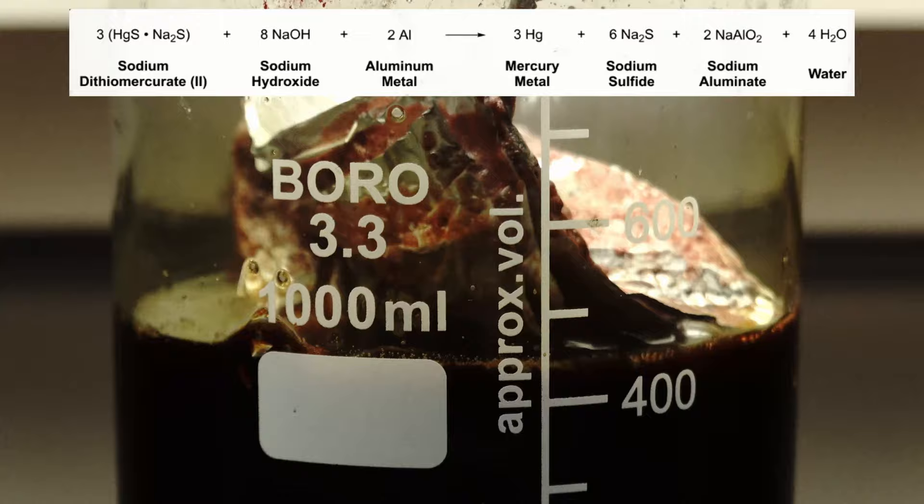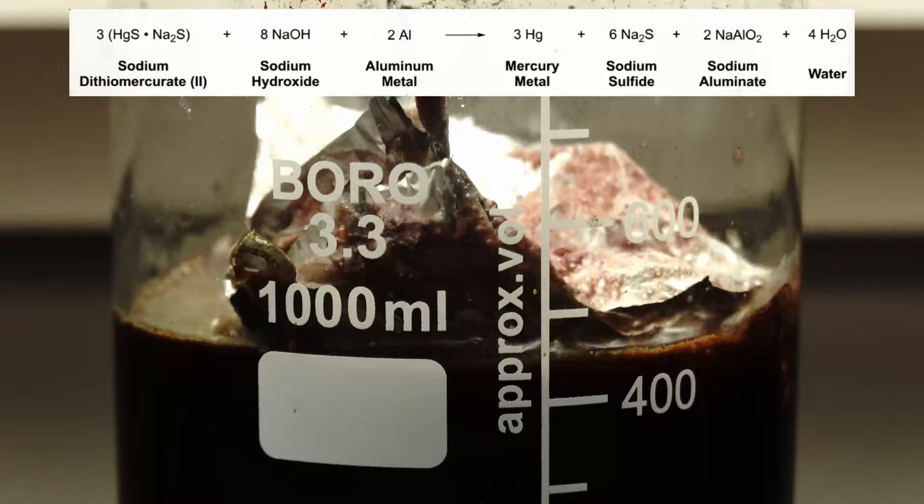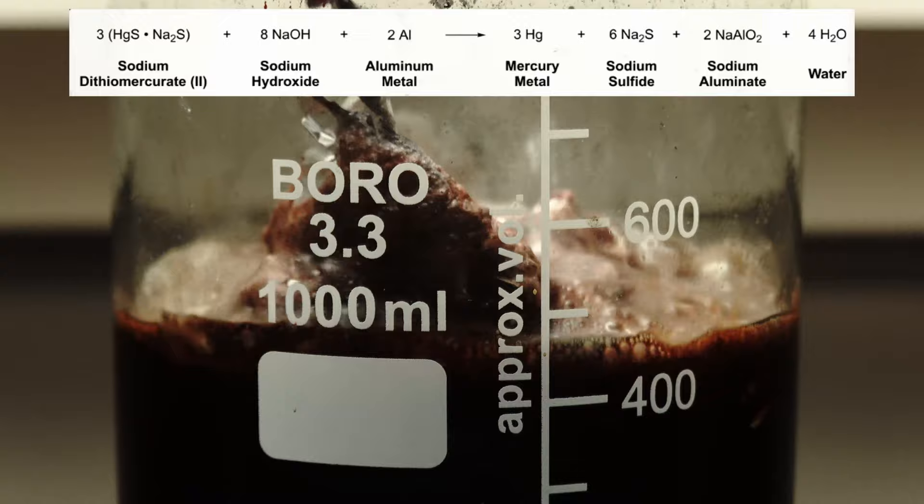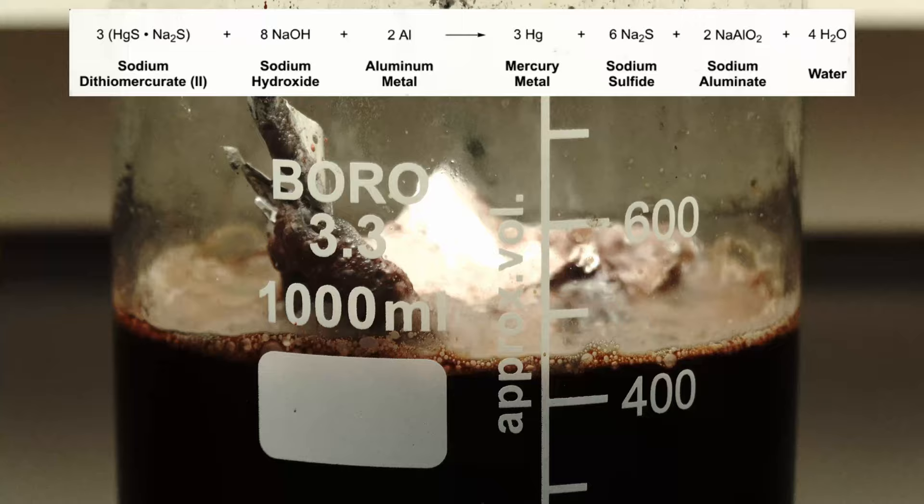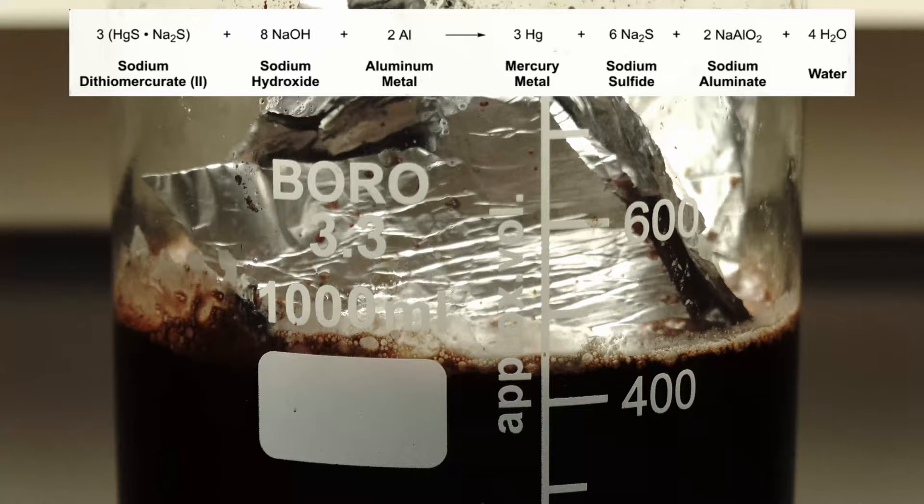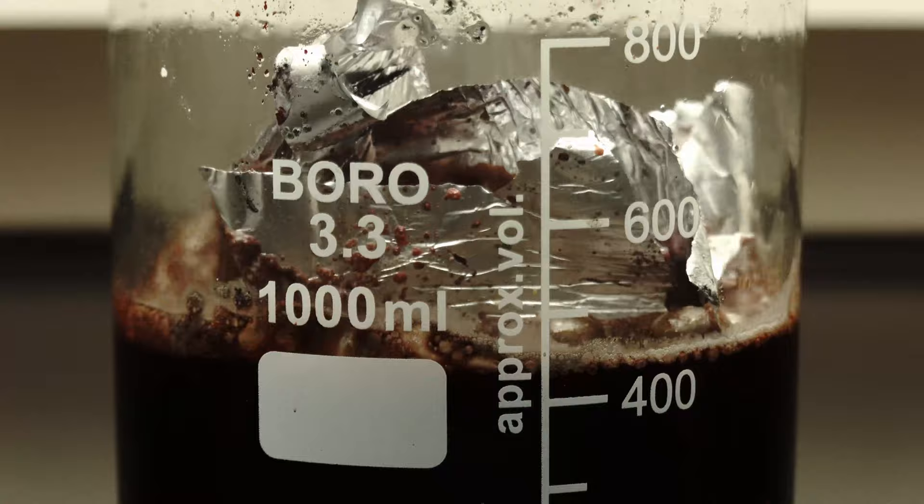What's happening here is that the aluminium is reacting with the dissolved sodium dithiomercurate, as well as the sodium hydroxide, forming mercury metal, some more sodium sulfide, sodium aluminate, and oxidane. The sodium sulfide proceeds to dissolve more mercury sulfide, which repeats the whole cycle over, in what's called a displacement reaction.